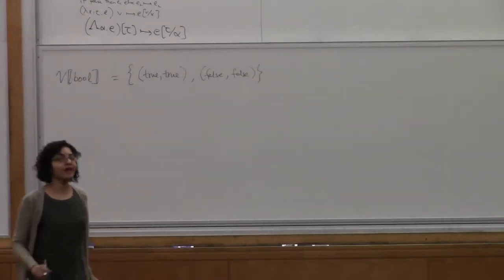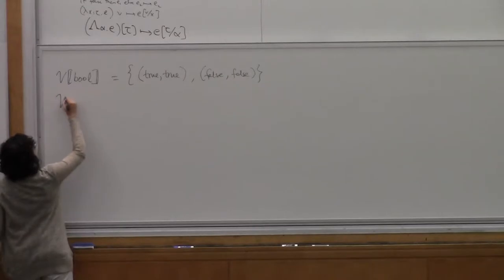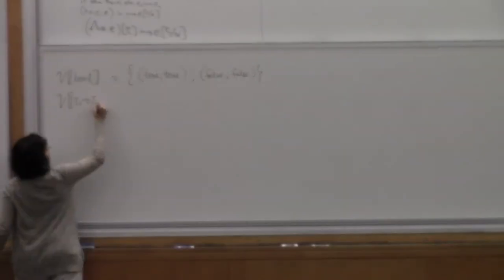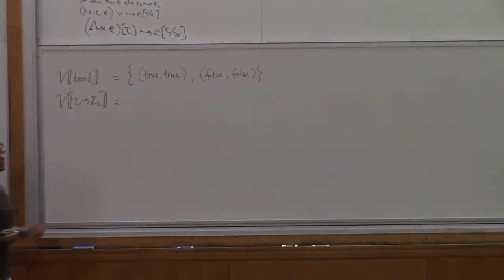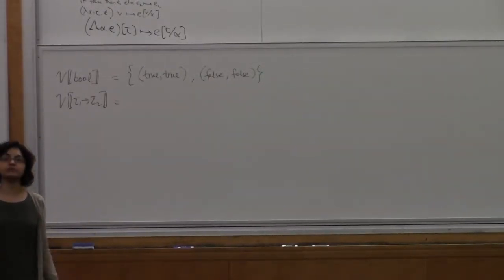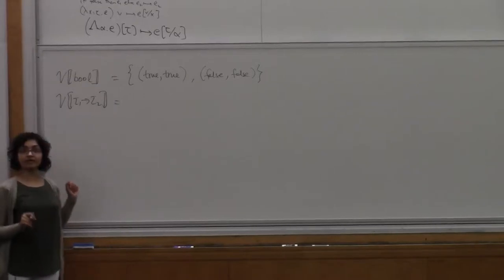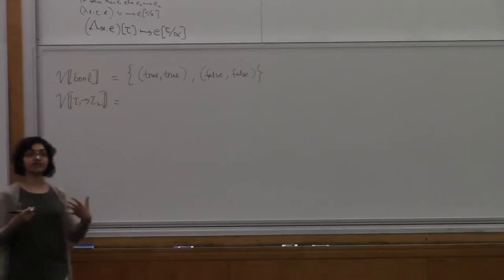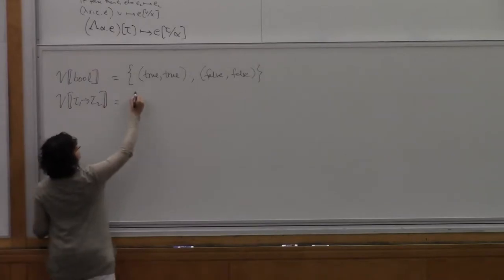When are two values related at the type bool? When they are both true or both false — they have to be equal. We can write this as: V1 and V2 belong to bool if V1 equals V2 equals true, or they both equal false. When can we say that two functions — two lambda terms — are related at the type tau1 arrow tau2?